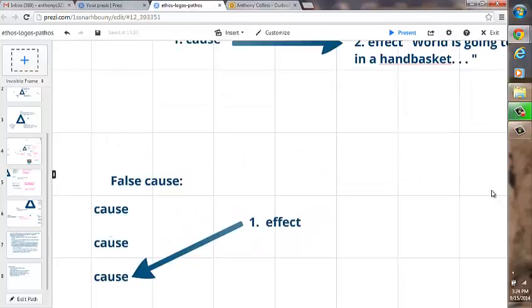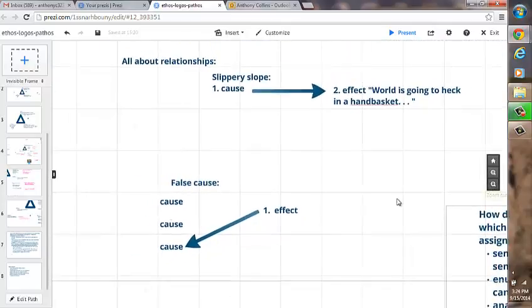So to put these two side by side and to try and make them as different as they really are, slippery slope goes forward. It forecasts some terrible future, whereas false cause goes backwards. It looks towards something in the past that made something in the present happen and maybe happen to our detriment. But the idea is that we're tracing back to the causes for that thing.